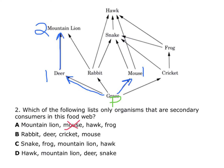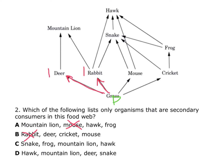Looking at answer choice B: grass is my producer. Rabbits are primary consumers because they eat grass. Deer are also primary consumers. Crickets are also primary consumers. And the mouse, once again, is a primary consumer. So just because these are all in the same trophic level can be misleading, but they're all primary consumers, and I'm looking for secondary consumers. So this is a very wrong answer.